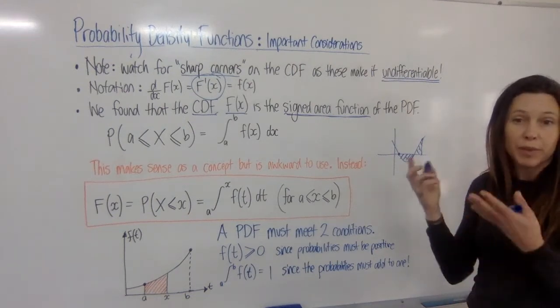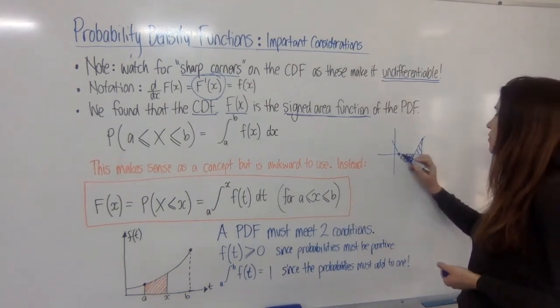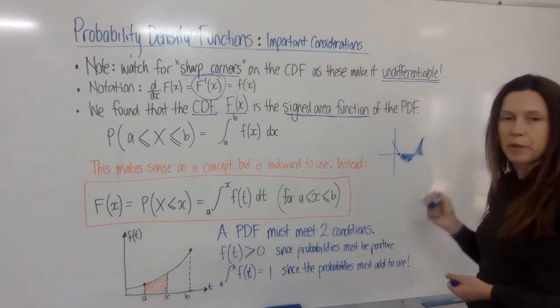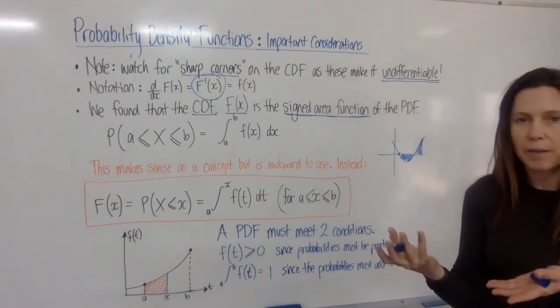Whereas if you want the area, then you need to just find the absolute value of this integral and the absolute value of this one, which will be positive anyway, and add them together.